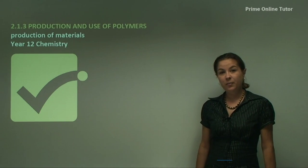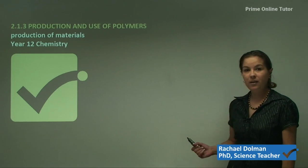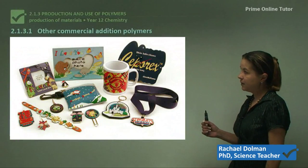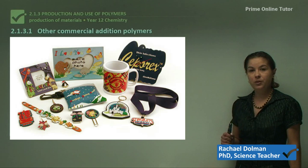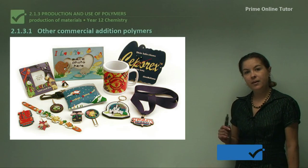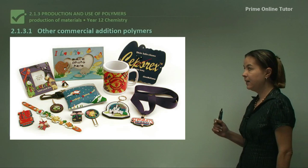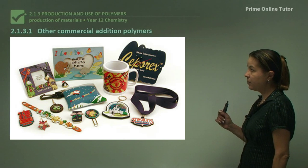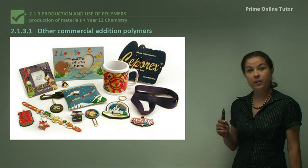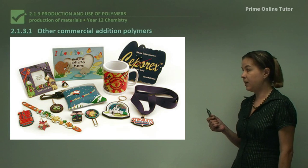Hi everyone, today we continue our discussion on the production and use of polymers, and today's topic is about other commercial addition polymers. In our last tutorial we talked about polyethylene, and today we'll talk about two other polymers that can be made from ethene, which are polystyrene and PVC.